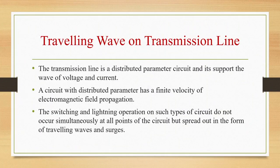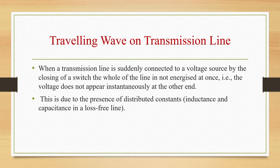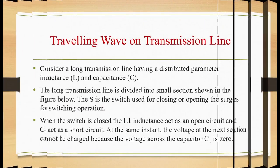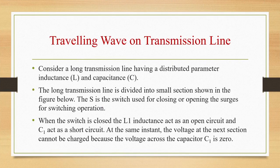A transmission line has distributed parameters — not lumped parameters. It has resistance, inductance, and capacitance distributed throughout the length. When the transmission line is suddenly connected to a voltage source by closing a switch, the whole line is not energized at once. Voltage does not appear instantaneously at the other end because of the presence of distributed inductance and capacitance. When the switch is closed, inductance L1 acts as an open circuit and capacitor C1 acts as a short circuit; at the same instant the voltage at the next section cannot be charged because the voltage across C1 is zero.